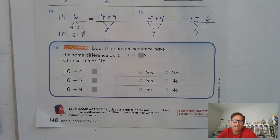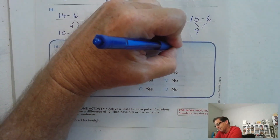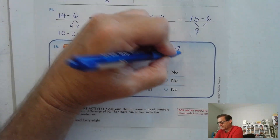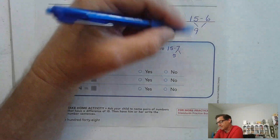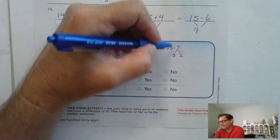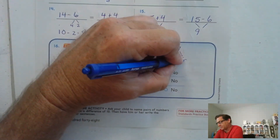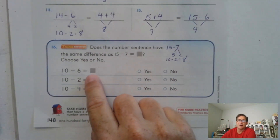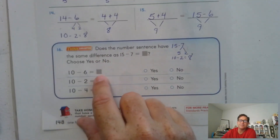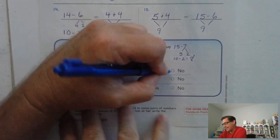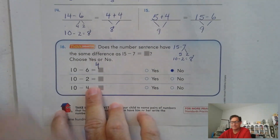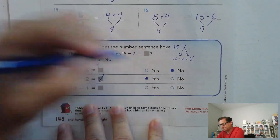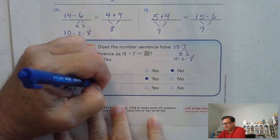Does this number sentence have the same difference as 15 minus 7? Let's figure out 15 minus 7. What do I subtract from 15 to get 10? I subtract 5, and 5 plus 2 is 7, so 15 take away 5 is 10 and 10 take away 2 is 8. We need differences of 8: 10 take away 6 is 4 — that's not 8. 10 minus 2 is 8 — yes. 10 minus 4 is 6 — that's not 8.